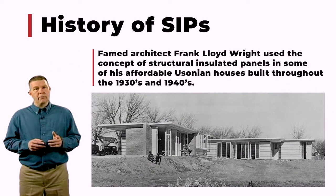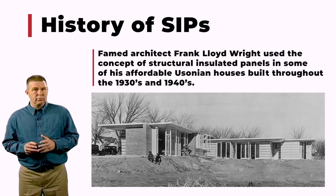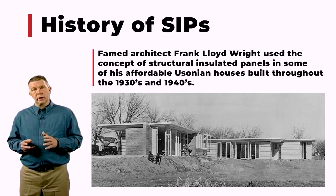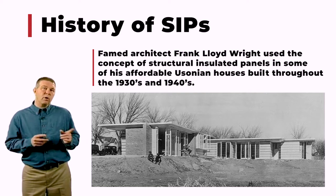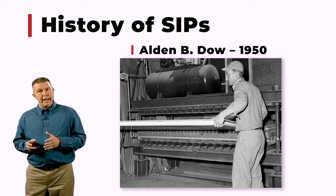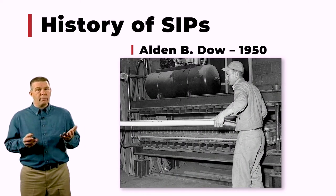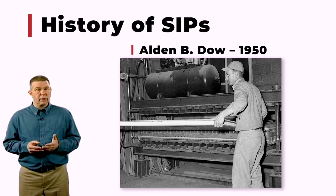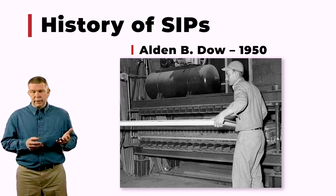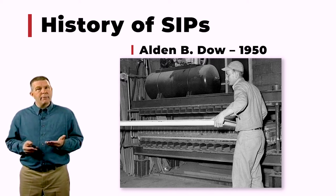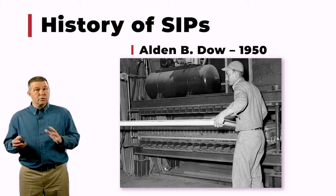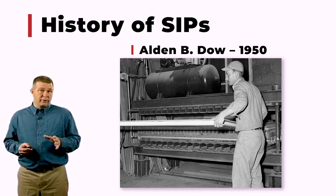Frank Lloyd Wright, in some of the earliest designs he built back in the late 30s and 40s, used the concept of a structural insulated panel. But it was one of his students, by the name of Alden B. Dow, who is largely credited as the first inventor or manufacturer of a true structural insulated panel. He took the technologies and ideas that the Forest Products Laboratory created and laminated together a core with two substrates, creating the first SIP — done in about the late 30s, early 40s.